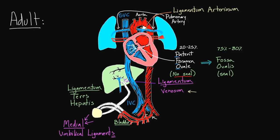So to summarize: we have a few ligaments down here by our belly button, one important ligament in our liver, and one up by our aorta separating it from the pulmonary artery. And finally, we have either a sealed-off version — which we call the fossa ovalis in our heart — or a patent foramen ovale. And even if that's the case, for most of us, that is not a problem.